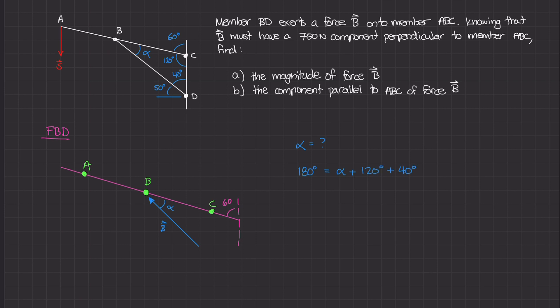Using the fact that the sum of interior angles of a triangle equals 180 degrees: 180 = alpha + 120 + 40. Solving for alpha gives alpha = 20 degrees. So the angle that force B makes with the ABC line is 20 degrees, which will be essential for solving this problem.